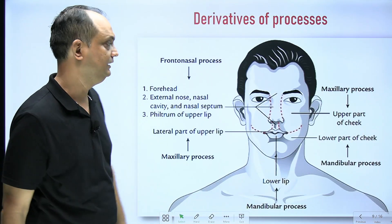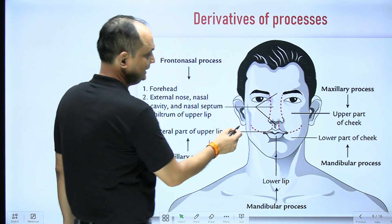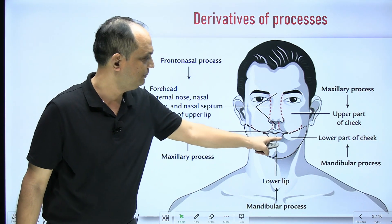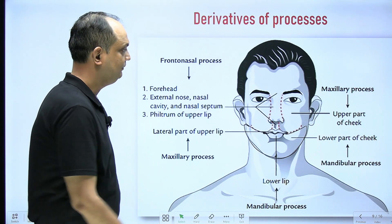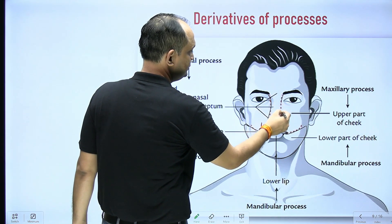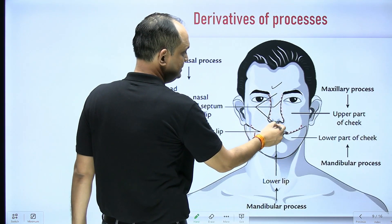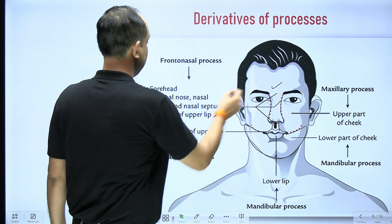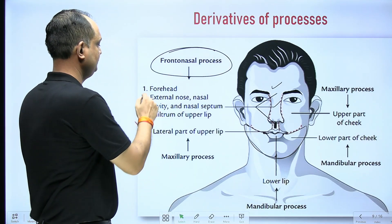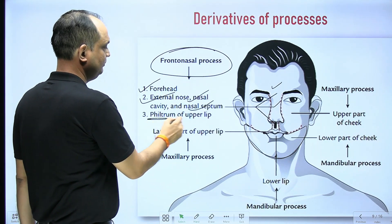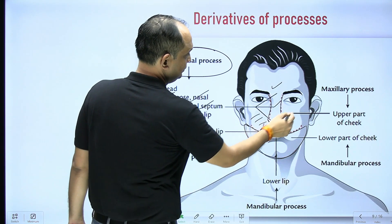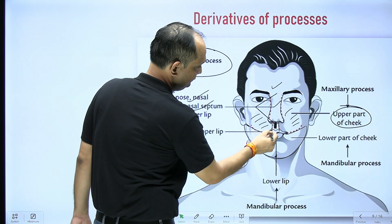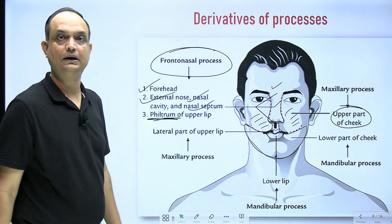Now what are the derivatives? Divide the face into three parts. The mandibular process forms your lower lip, chin, and the lower part of the cheek. The middle area — forehead, nose, and the center portion of the upper lip known as the philtrum — develops from the frontonasal process. So the frontonasal process forms the forehead, external nose, septum, and philtrum of the upper lip. The maxillary process forms the upper part of the cheek and the lateral sides of the upper lip, but not the middle portion of the upper lip.